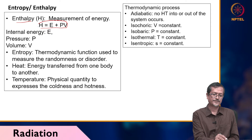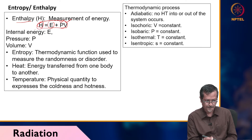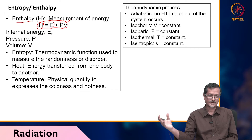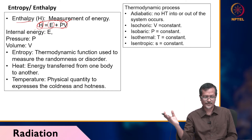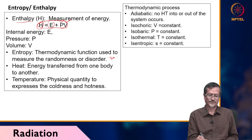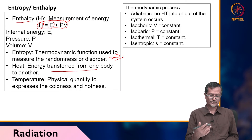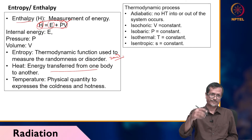Enthalpy formula is H equals E plus PV, where E is internal energy, P is pressure, and V is volume. If pressure and volume change, internal energy also changes, so enthalpy changes. Enthalpy is obtained from the Mollier diagram — we will see how to calculate using that later. Entropy is the thermodynamic function used to measure randomness or disorder, coming from the second law of thermodynamics. Heat is energy transfer from one body to another, and temperature is the physical quantity expressing coldness or hotness.